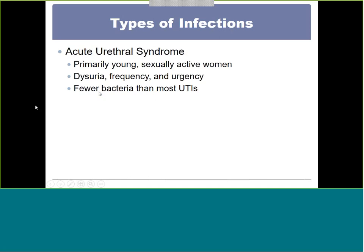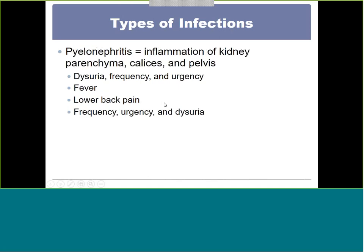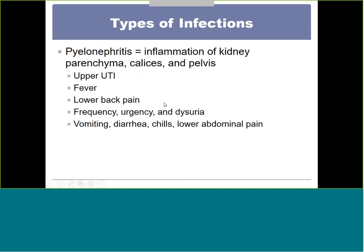Acute urethral syndrome is associated more with sexually active women. Pyelonephritis is the upper UTI, involving the kidney, and is more severe — presenting with significant pain and fever.